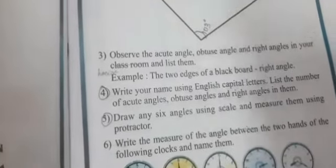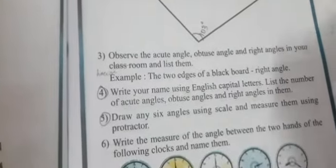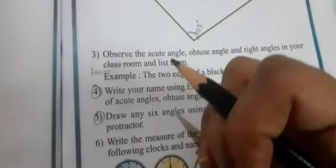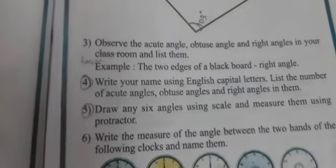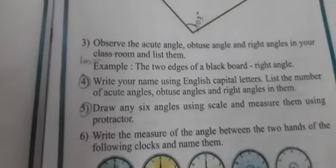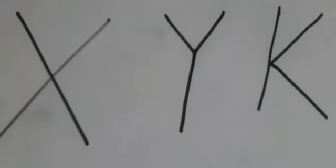Just mention them. The blackboard is of right angle. Pencil box, textbook, duster — these are all a few examples of right angle. Now let's see a few examples of obtuse angle in the classroom. The alphabets like X, Y, and K form the obtuse angle in the classroom.